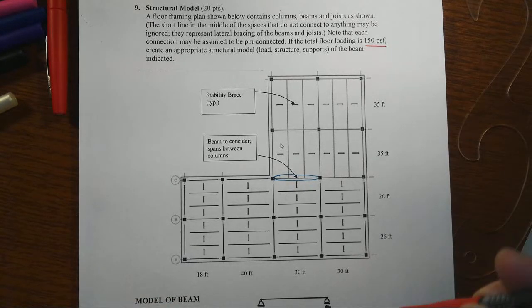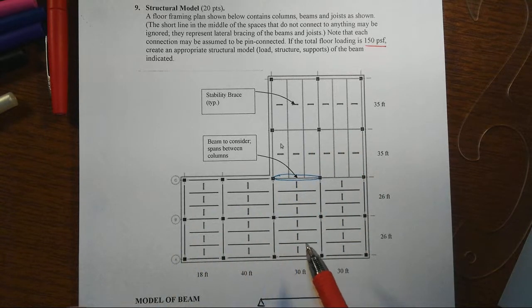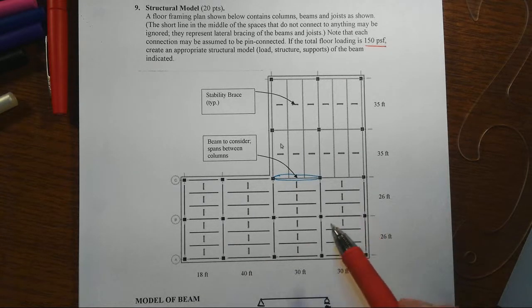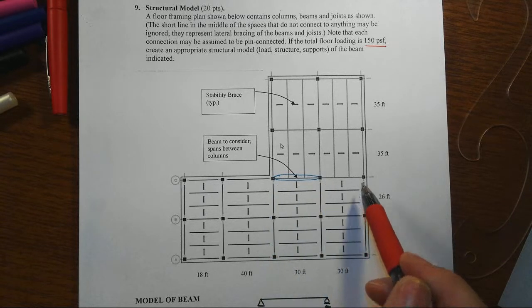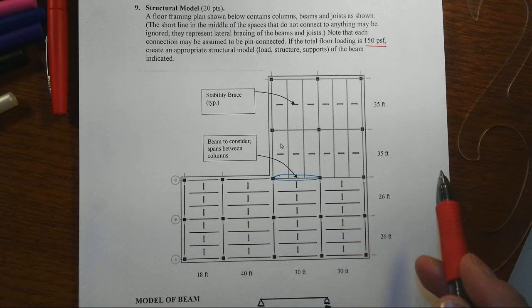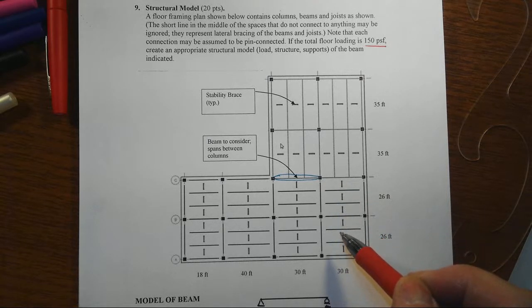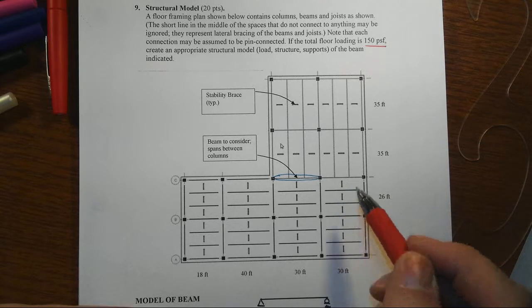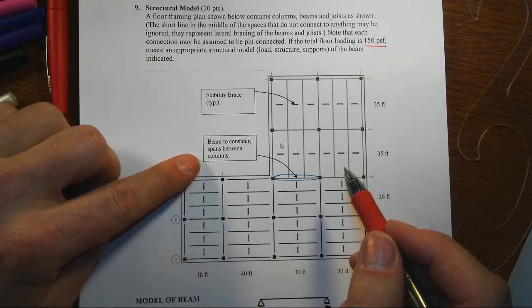On this exam item we've got an L-shaped floor plan for a building. There's our column spacing at somewhat irregular spacing. We have the beams that frame between the columns and then the individual floor joists. We're told that these other little short lines are stability bracing and not to be considered a beam, and so that helps us to deal with what we're asked to do.